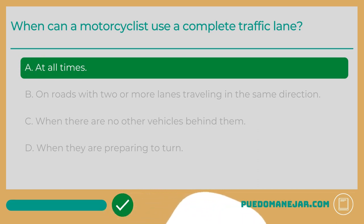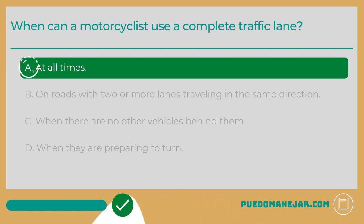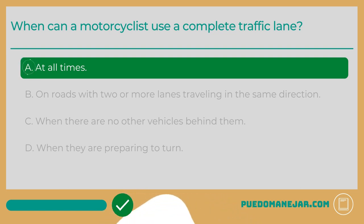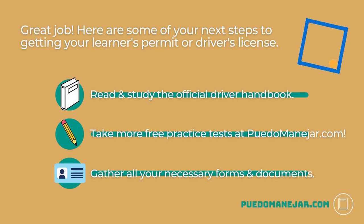Just like passenger vehicles and trucks, motorcycles are entitled to a full lane of traffic at all times. Never drive beside a motorcyclist in the same lane. Motorcycles need to utilize the full lane of traffic in order to place themselves in the safest lane position based on traffic conditions, weather, and road conditions. If you drive too close to a motorcycle, you will take away its escape routes and space cushion and increase the likelihood of a collision.